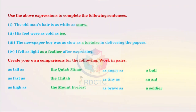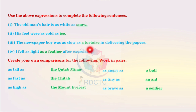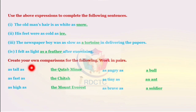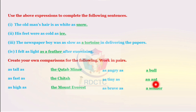Use the above expressions to complete the following sentences. The old man's hair is as white as snow. His feet were as cold as ice. The newspaper boy was as slow as a tortoise in delivering the papers. I felt as light as a feather after exercise. Now, create your own comparisons: as tall as the Qutub Minar, as fast as a cheetah, as high as Mount Everest, as angry as a bull, as tiny as an ant, as brave as a soldier.